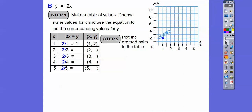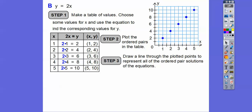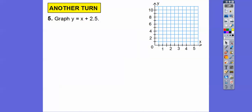So over one up two, over two up four, over three up six, over four up eight, and over five up ten. Then we draw a line through those and connect them to represent all ordered pairs, including fractional parts.